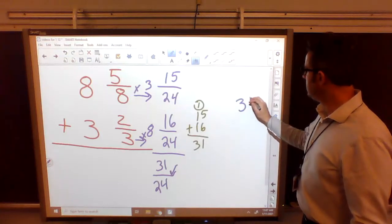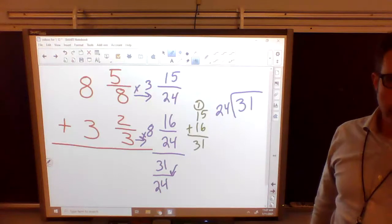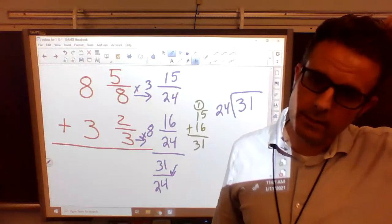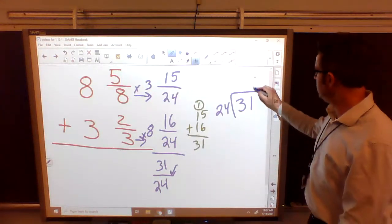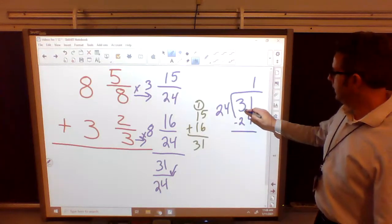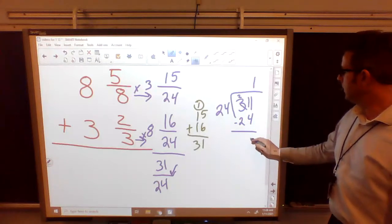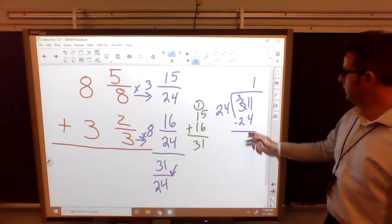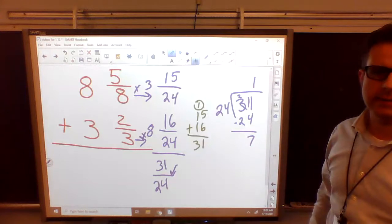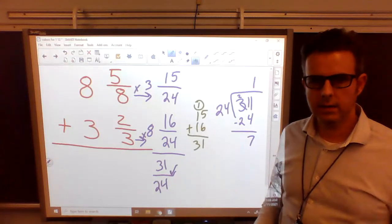When we do 31 divided by 24, how many times will 24 fit into 31? Well, the answer is 1. So we're going to put our 1 up here. We're going to subtract our 24. Some of y'all will want to regroup this. 11 minus 4 is 7. 2 minus 2 is 0. So we're left with 7. We don't leave it as a remainder. We turn it into a fraction.